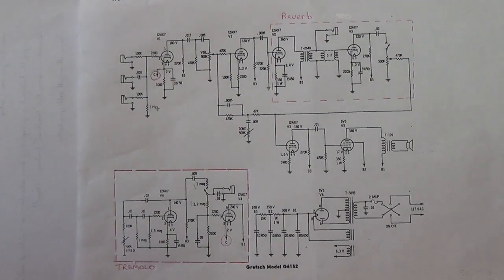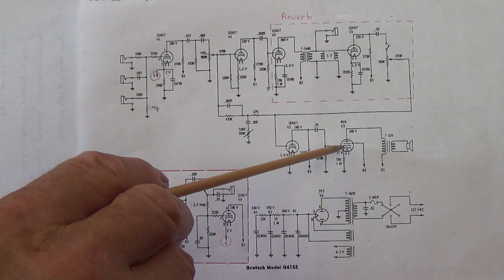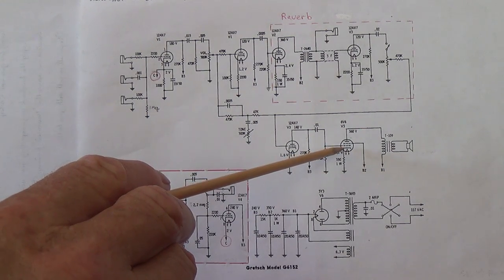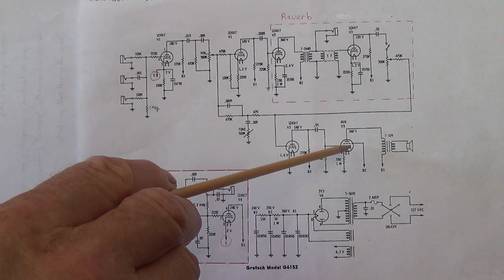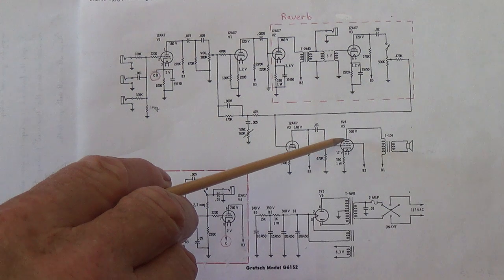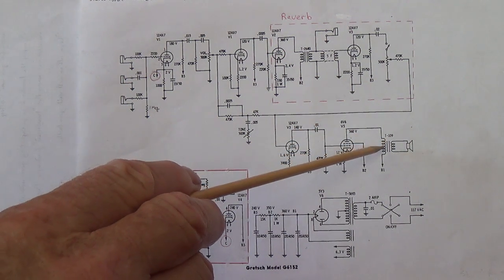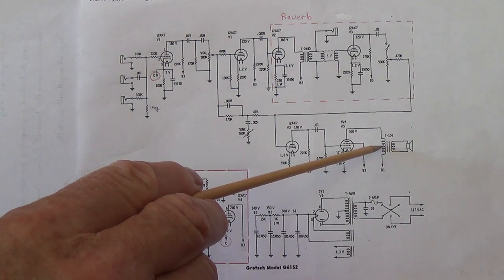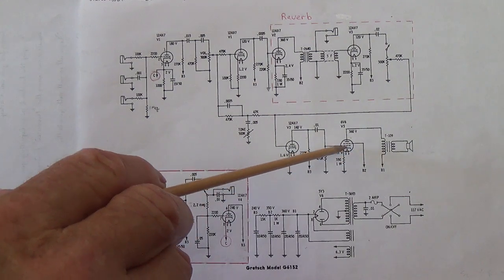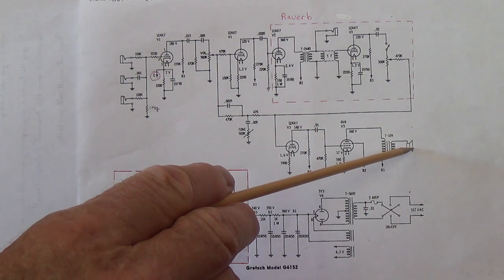Now a couple other changes that are going to be necessary. One is that I would like to be able to substitute a 6L6 instead of a 6V6 for the output tube. 6L6 as you know is going to put out a whole lot more power. To do that however I will probably have to upgrade the output transformer and I intend to do that. A 5 watt output transformer would probably not do well with a 6L6 output tube. And also I might want to upgrade the speaker a bit.